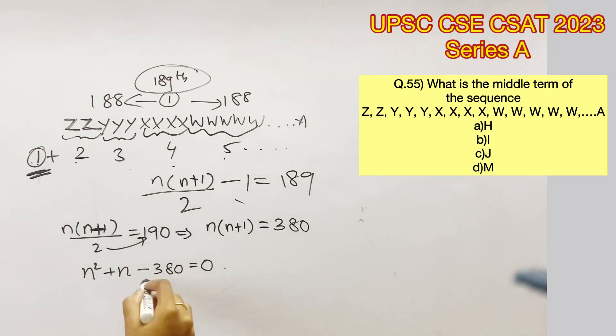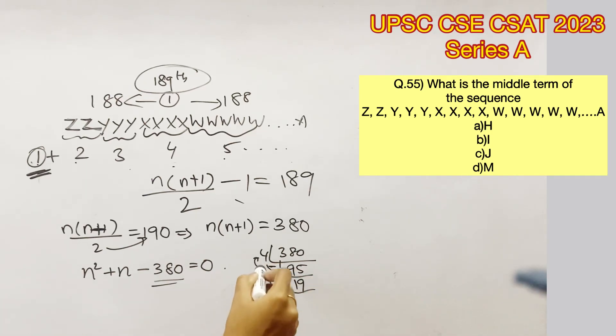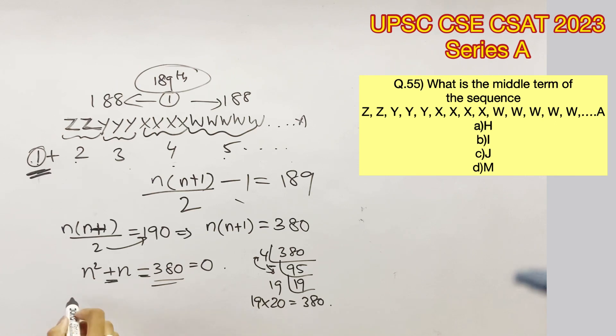Now we have to find a product that gives minus 380 and the sum that gives 1. Let's factorize 380 to make it easier. So factorizing 380 with 4, we get 95. Factorizing 95 with 5, we get 19. Therefore, 19 into 20 gives 380. The product is minus 380, but the sum is plus 1, which means the greater value has to be positive. Therefore, N plus 20 into N minus 19 equals 0.